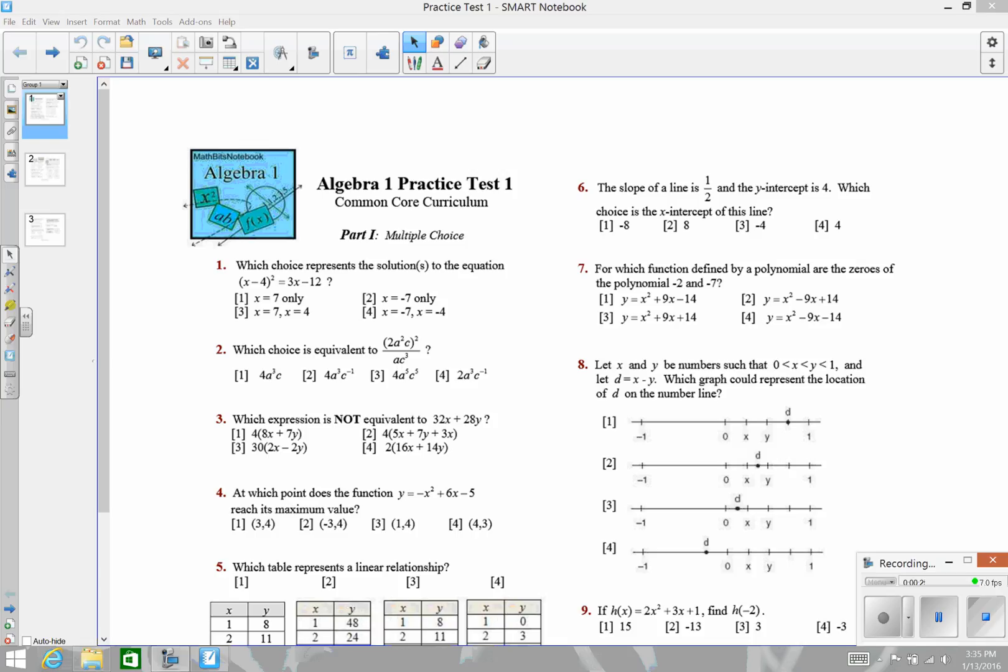Alright, taking a look first at number 1, you have an equation here that you need to solve and find the value for x that makes this true. What I need to do is take my x minus 4 squared, create the box and multiply that out. I'm going to do that work up here in the corner.